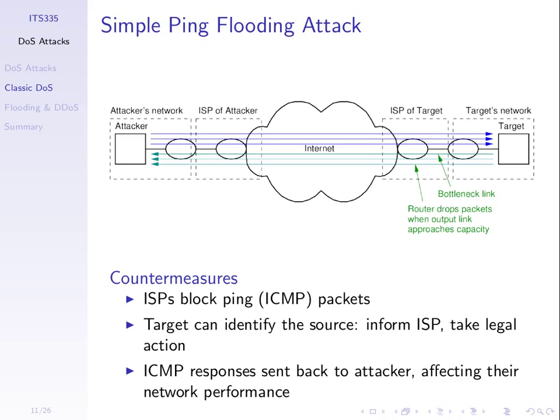Let's go through the different forms of denial of service attacks using ping flooding. In all cases we're looking at using ping to generate a lot of traffic to overload the network resources. For the simple case, imagine the link entering the target's network is the bottleneck — the slowest — so to overload the network resources we need to send enough to reach the capacity of that link.